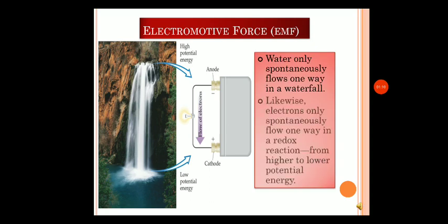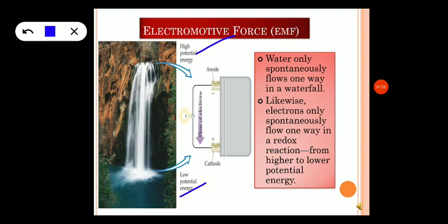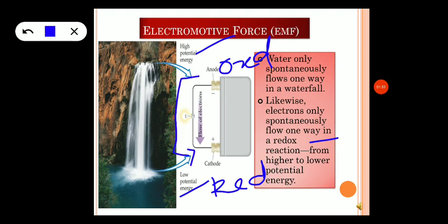Let us understand this with the help of the flow of electrons. We know that water always flows downhill — it moves from a higher to a lower level. In the same way, electrons also flow from higher potential to lower potential. Just like water, electrons spontaneously flow in one direction in a redox reaction: from higher to lower potential energy. Oxidation occurs at the anode while reduction occurs at the cathode, and electrons move from anode to cathode. The flow of electrons and flow of current are always conventional to each other — if electrons flow from anode to cathode, current flows from cathode to anode.